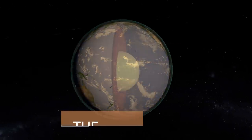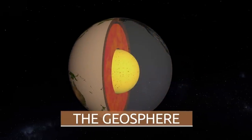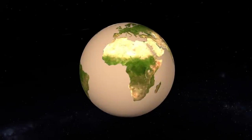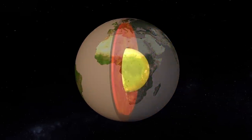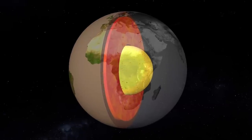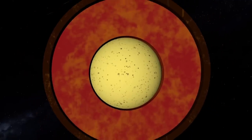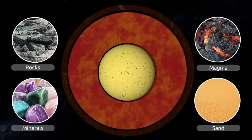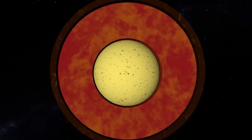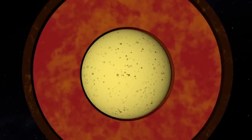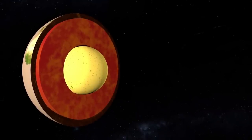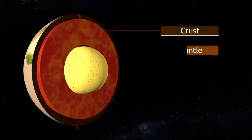Today we're going to learn about the geosphere. The geosphere is an inner layer of the earth extending from its surface to the inner core of the planet. This layer is made up of solid rock and habitable ground, with a thickness of approximately 6,730 kilometers. The geosphere is composed of rocks, minerals, magma, and sand. As we get closer to the inner core, temperature, density, and pressure progressively increase. The geosphere consists of three concentric layers: the crust, the mantle, and the core.